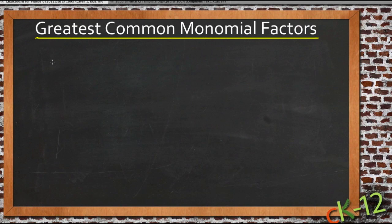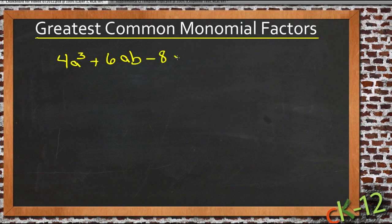Factoring out a common monomial from a polynomial is really just a matter of looking to see what number or number and variable combination everything inside the polynomial can be divided by. So let's look at an example. Let's say we had 4a³ + 6ab - 8a² + 12a⁴.